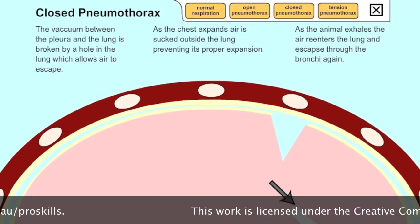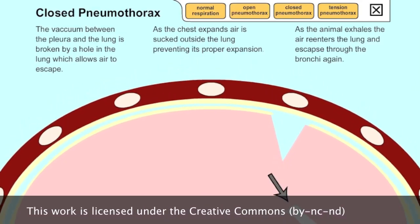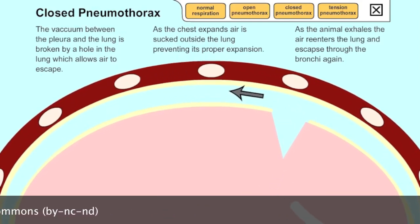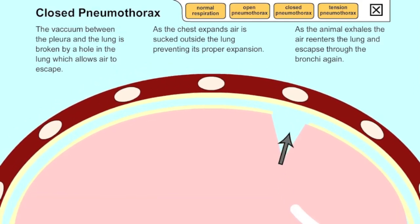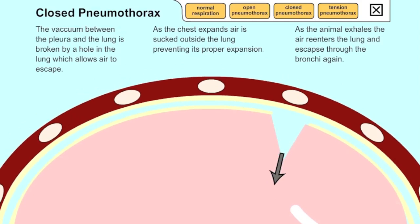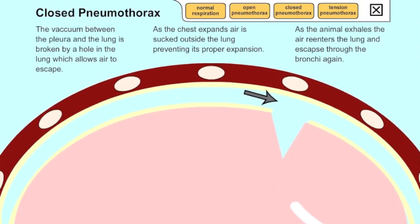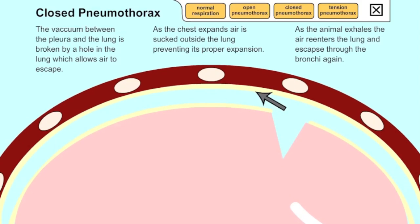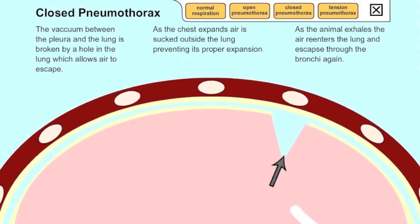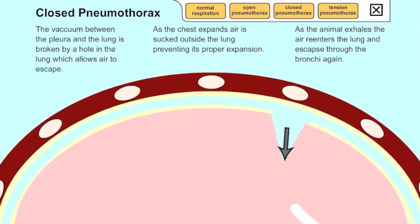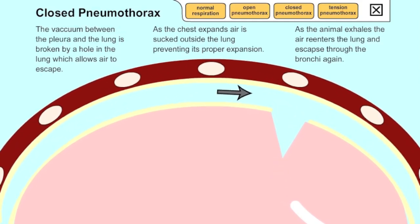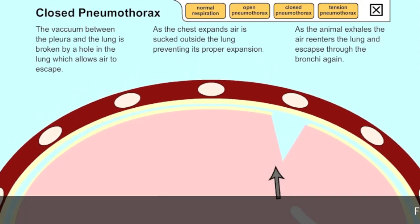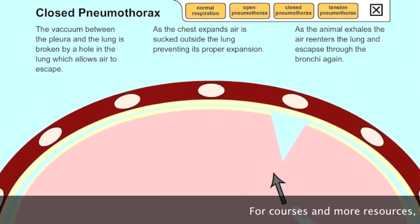In a closed pneumothorax, we do not have a wound penetrating through the chest wall. However, the vacuum within the pleura has been broken by a hole in the lung itself. This hole allows air to escape. As the chest expands, air is sucked outside the lung, preventing proper expansion. As the animal exhales, air re-enters the lung and escapes through the bronchi again. You may see normal chest movement, but without that vacuum, the lungs cannot work properly and we're not achieving gaseous exchange.